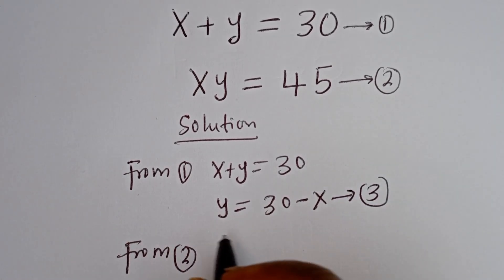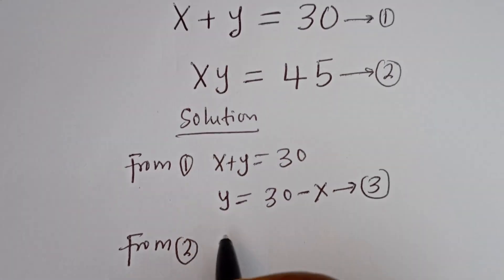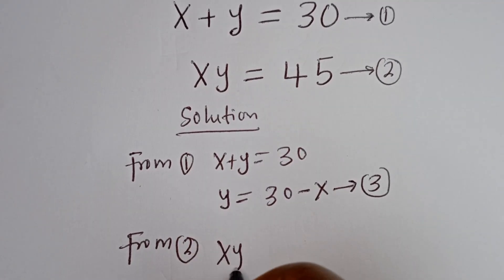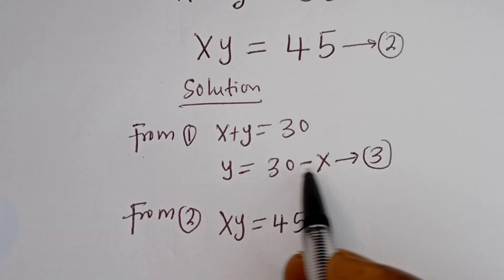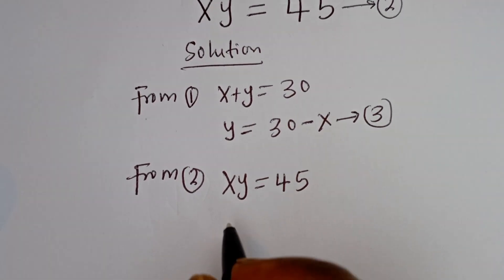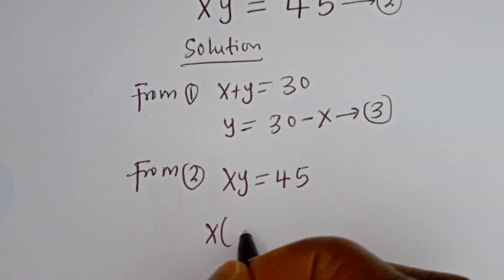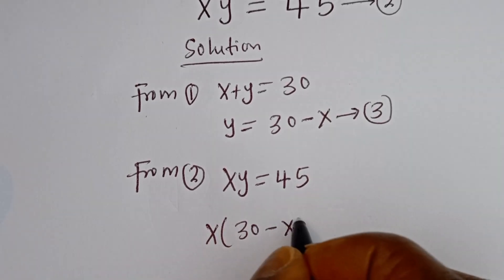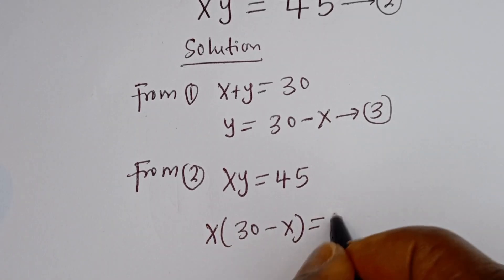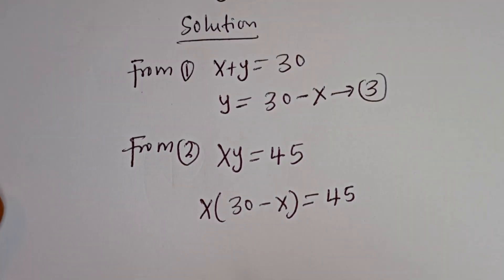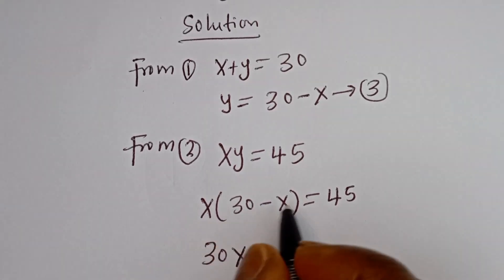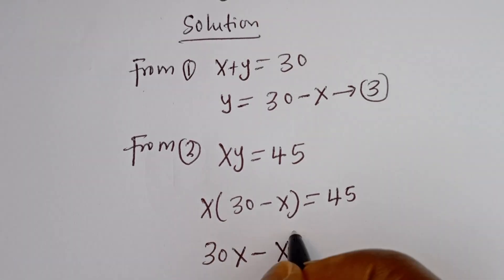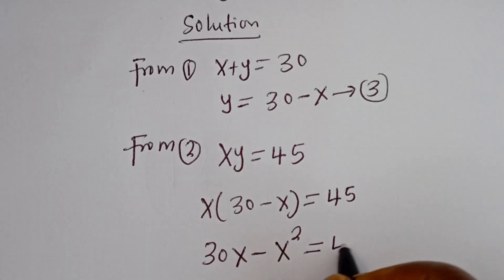Substituting equation 3 into equation 2: when y is equal to 30 minus x, we have x times bracket 30 minus x is equal to 45. Let's open the bracket: x multiplied by 30 is 30x, minus x multiplied by x, which is x squared, is equal to 45.